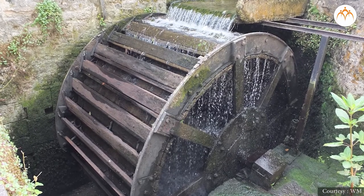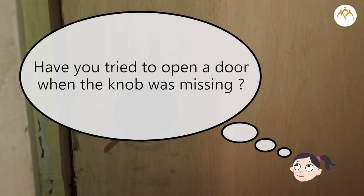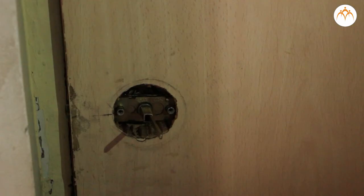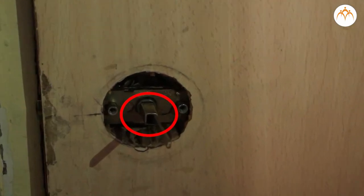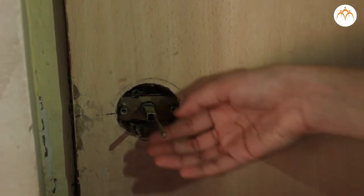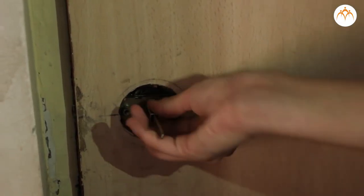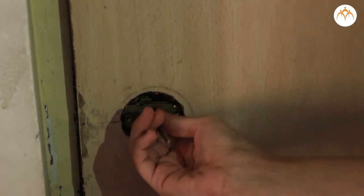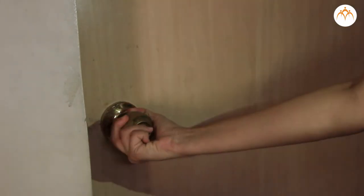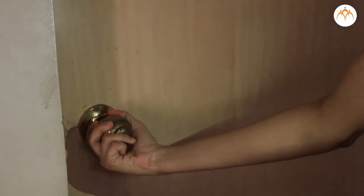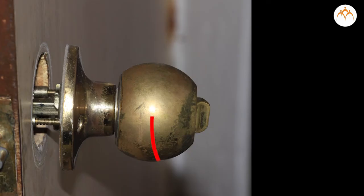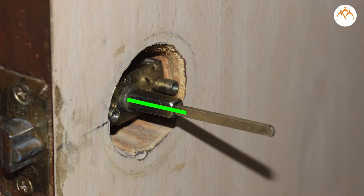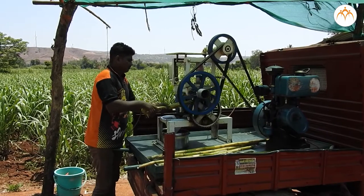Have you tried to open a door when the knob was missing? If you have, you know that trying to twist that small four-sided shaft with your fingers is tough work. That gives you some appreciation of the advantage you get by using a knob. A door knob is an example of a simple machine called a wheel and axle — the knob is the wheel and the thin shaft connected to it is the axle.